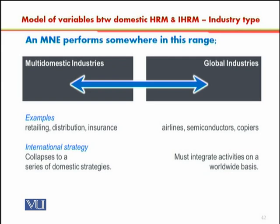A multi-domestic industry is one in which an international organization operates in the form of small domestic organizations in various different countries. They do not need to have an overarching perspective or integrated coordination between different units. For example, Coca-Cola operates in Pakistan as a domestic market. How Coca-Cola performs in Pakistan does not affect how it is sold in France, China, or Australia. Coca-Cola selling all over the world is a collection of all those domestic markets put together.